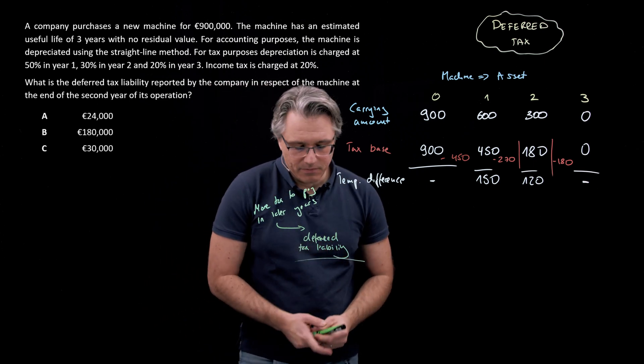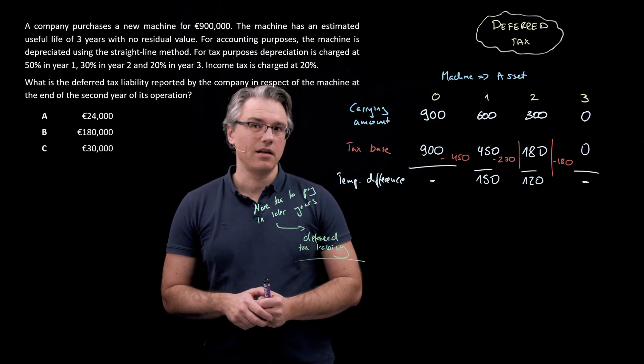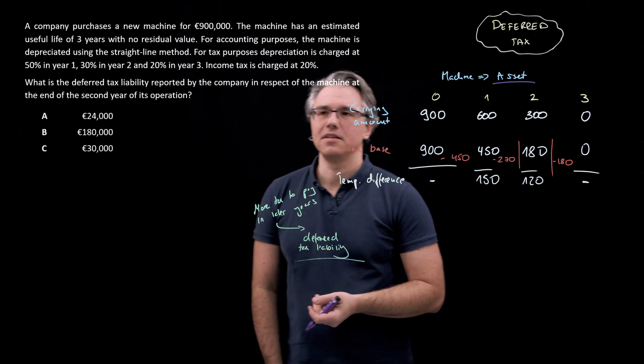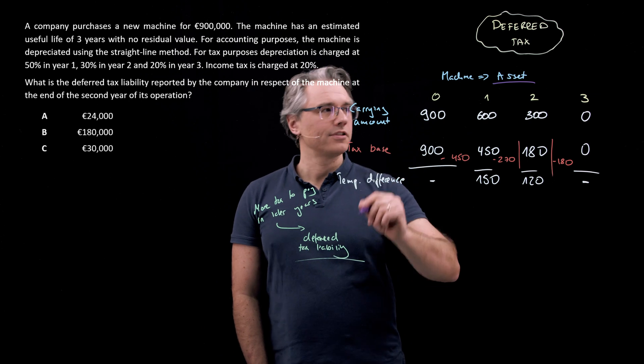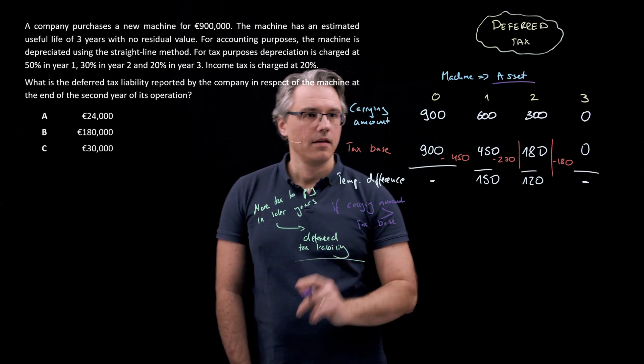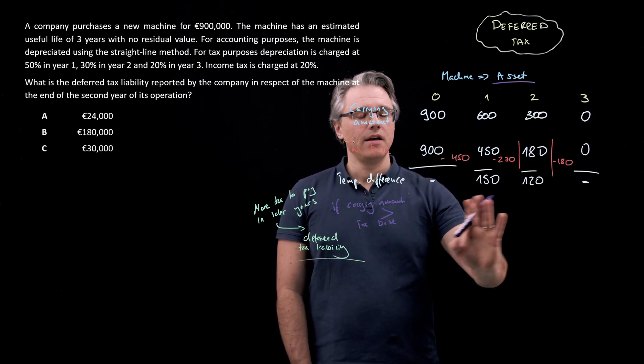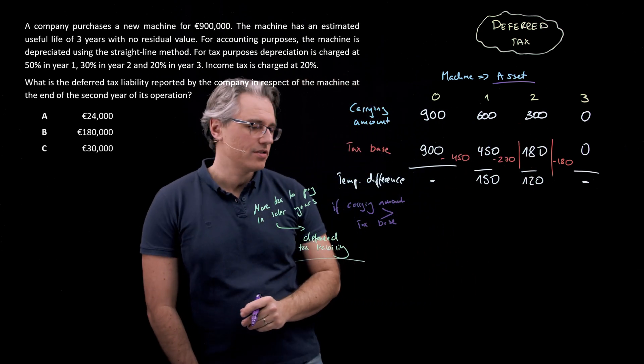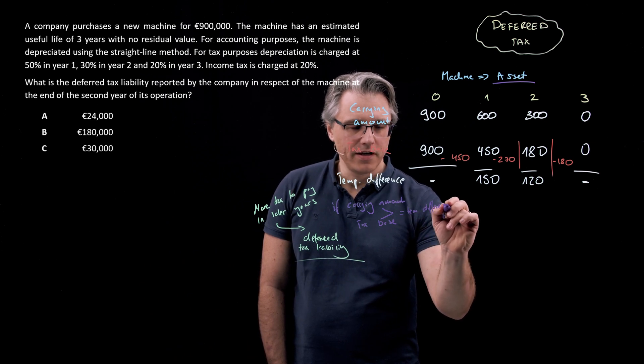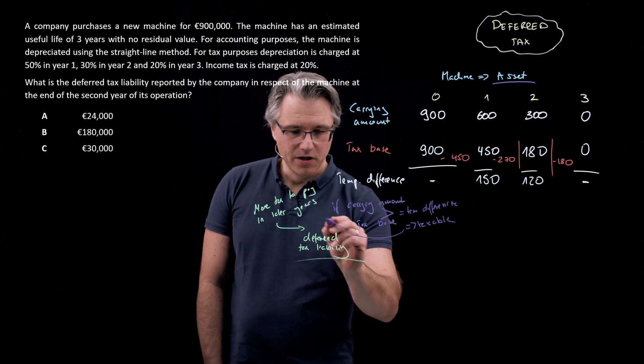This will naturally mean you're going to have a deferred tax liability. Now this can also be realized from the fact that according to some of the rules which I gave in the initial videos for this topic, whenever you're dealing with an asset, and remember this is a machine, so absolutely an asset in the balance sheet, if the carrying amount is higher than tax base, as is the case here all the time except for 0.0 and 0.3, in years one and two we've got a carrying amount which is higher than the tax base. This temporary difference is of a taxable nature. That's why we've got a deferred tax liability.